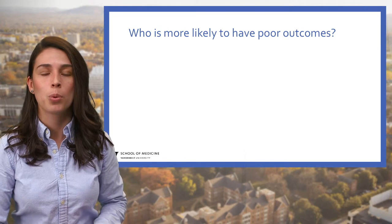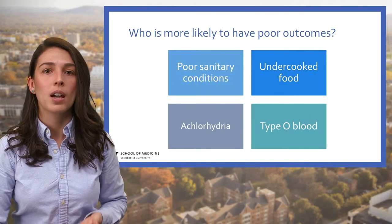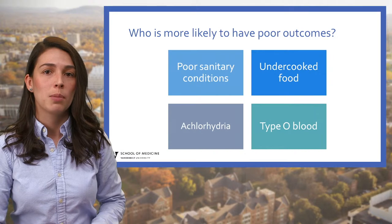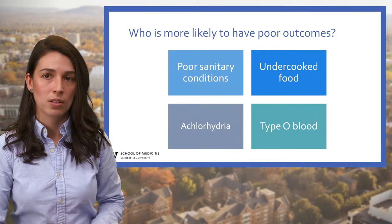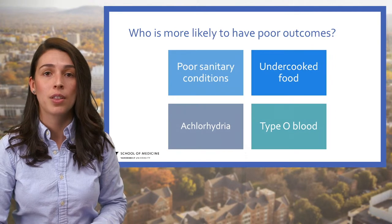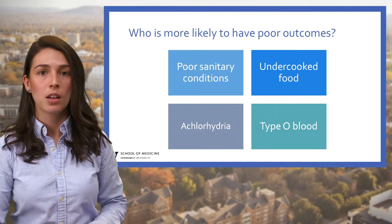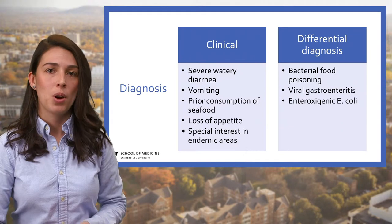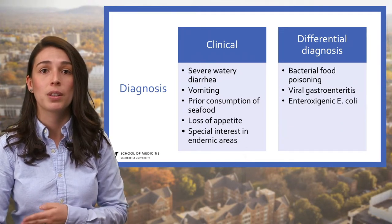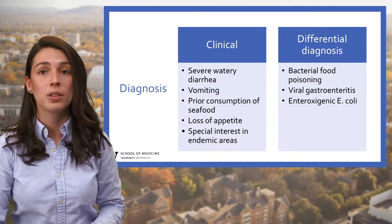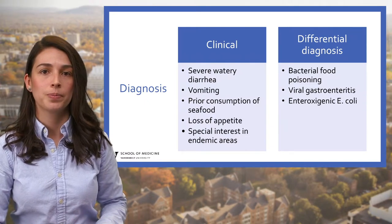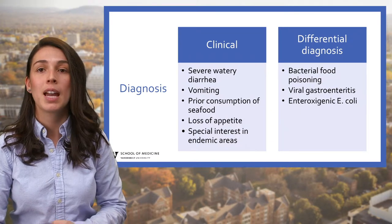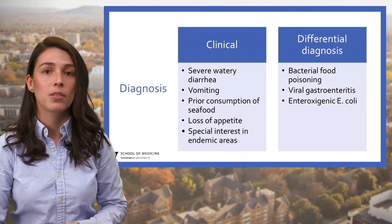Those more likely to have poor outcomes include individuals with achlorhydria — the absence of hydrochloric acid in the digestive stomach juices — and people with blood type O. Patients with chronic medical conditions and those without ready access to rehydration therapy and medical services are more likely to have severe disease. It is almost impossible to distinguish a single cholera patient from a patient with another pathogen causing acute watery diarrhea without testing a stool sample.